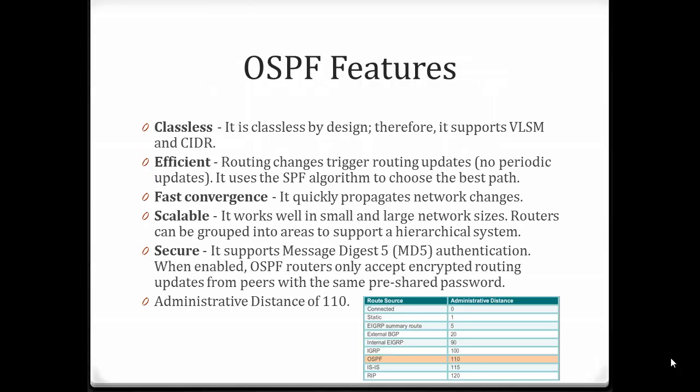OSPF has many features that make it appealing to use as a routing protocol. One of the features is that it's classless, meaning it supports variable-length subnet mask and CIDR. It's very efficient compared to RIP, for example. Routing changes trigger routing updates — there are no periodic updates. We don't send entire routing tables every 30 seconds like we do with RIP. We have faster convergence, and we can quickly propagate network changes to all other routers in the OSPF domain. It's also very scalable and works well in both small and large network sizes.